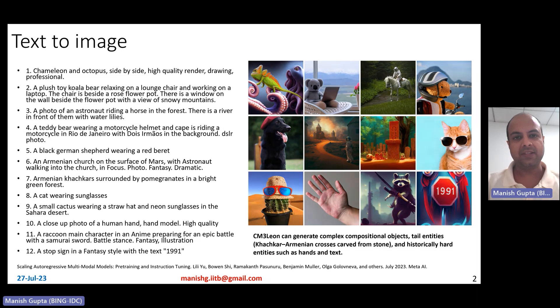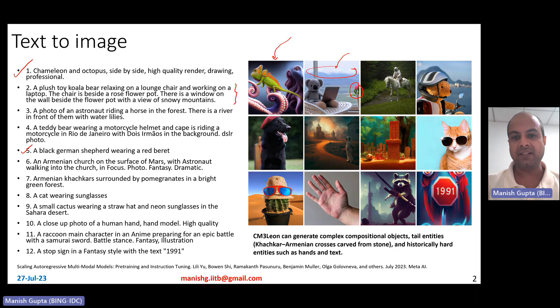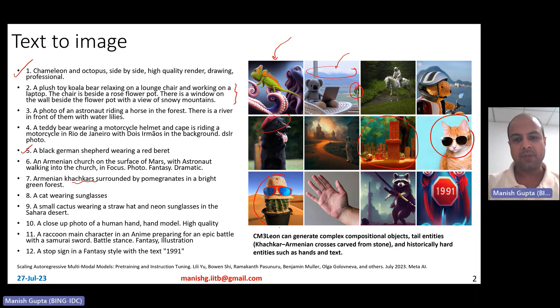What can this model do? It can actually do text-to-image generation. You can give interesting prompts like 'Chameleon and Octopus side-by-side, high-quality render, drawing and professional' and it comes up with results. You can give very descriptive prompts like 'a plush toy koala bear relaxing on a lounge chair and working on a laptop, the chair is beside a rose flowerpot, there is a window on the wall beside the flowerpot with a view of snowy mountains.' You can also give prompts like 'a black German Shepherd wearing a red beret.'